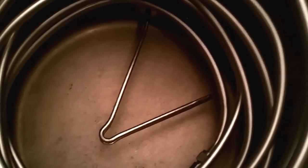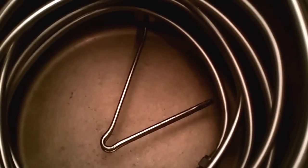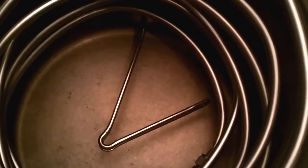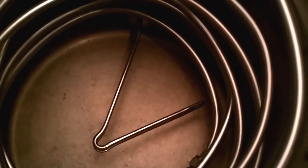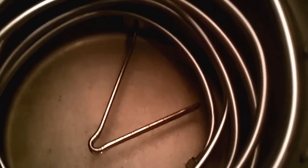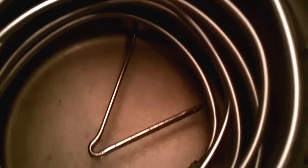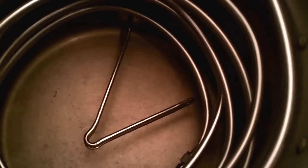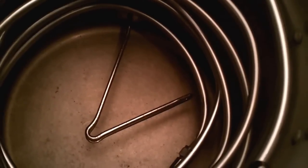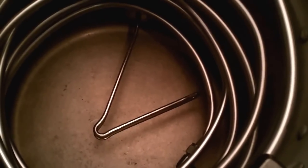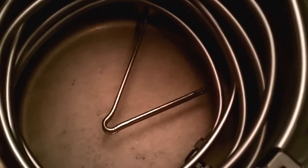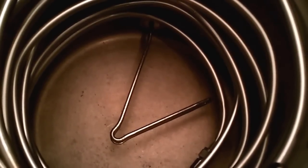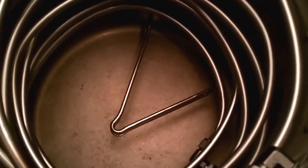Now, one thing about these elements is that you have high-watt density and low-watt density and also ultra-low-watt density. This particular one's a high-watt density. And the reason I went that route in the HLT is just because it's a little bit cheaper. And I don't have it direct firing any wort. So there's no chance of scorching or caramelization or anything like that. So I just figured I'd save a few bucks and just put a more of a standard element in that particular one.